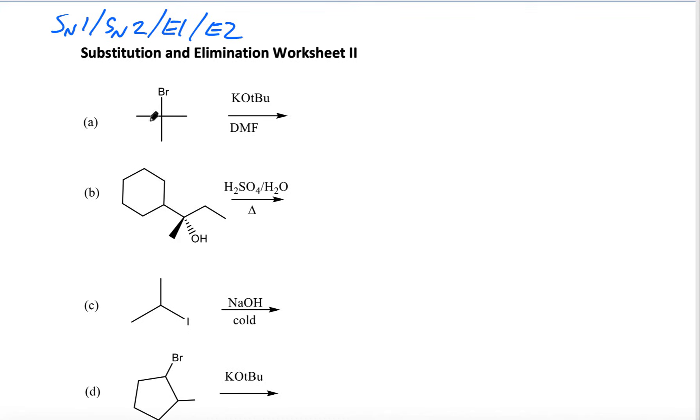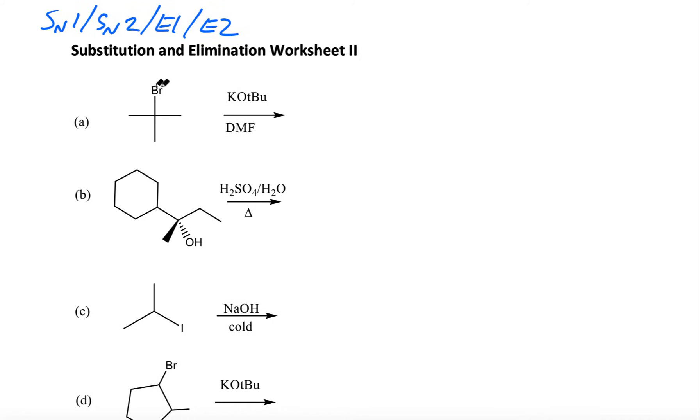The first thing I do generally is I read from left to right and mainly I look at these two things. The first thing is I look at this molecule and determine what the leaving group is and the carbon it's attached to. Is it a methyl group? Is it primary meaning attached to one carbon, two carbons or three carbons?